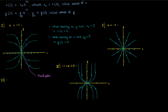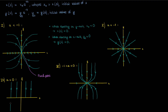Our penultimate scenario is where a is 0. When a is 0, our solution x(t) is just a constant equal to its initial value x₀. y(t), on the other hand, will continue to decrease towards 0 because it still has the e to the negative t. So our trajectories will all approach the x-axis, meaning the x-axis now becomes an entire line of fixed points.